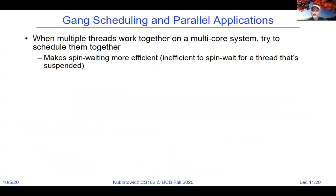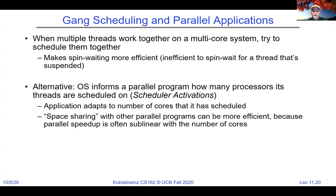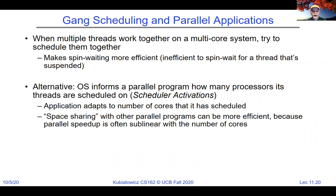When multiple threads are working together, they should all be scheduled at the same time — that's called gang scheduling. It makes spin-waiting efficient, since it's very wasteful to spin-wait for a thread that's suspended on a wait queue. Some systems inform a parallel program how many processors its threads are scheduled on, called scheduler activations — the application then adapts to the number of cores currently scheduled.